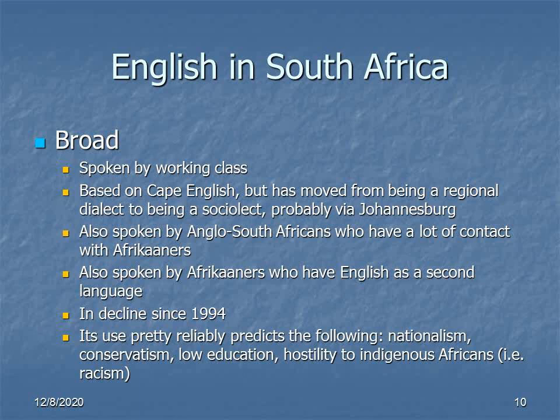The broad South African dialect is a pretty reliable indicator of nationalism — particularly white nationalism — conservatism, low education, and hostility to indigenous Africans, or in other words, racism. Its cultural associations in South Africa are actually very similar to the cultural associations of a rural Deep South accent in the United States, and largely for the same reasons. Apartheid and segregation were basically just two versions of essentially the same policy, and the mindsets of white supremacy are deeply ingrained still in certain elements of both cultures. But since free elections began in 1994, the broad dialect has been on the decline.